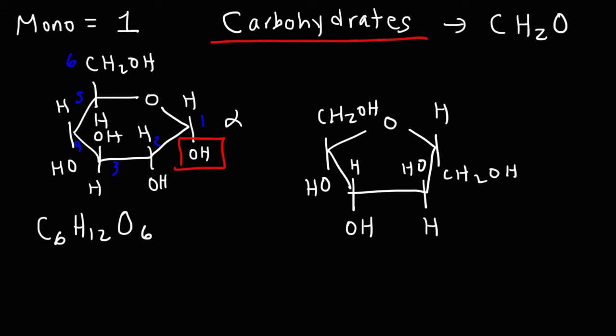Glucose is an aldohexose. In its straight chain structure, it forms an aldehyde functional group. Glucose and fructose are known as isomers of each other. They have the same chemical formula, C6H12O6, but they form different structures.